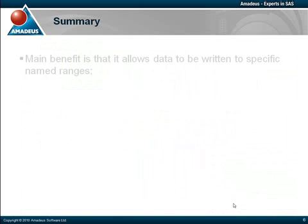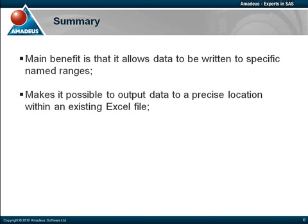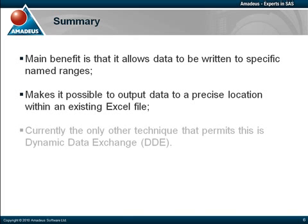In summary, the main benefit of the Excel LibName engine is that it allows data to be written to specific named ranges. This means that data can be output to precise locations within an existing Excel spreadsheet. Currently, the only other mechanism for doing this is through Dynamic Data Exchange, or DDE, which is a much more complicated approach.